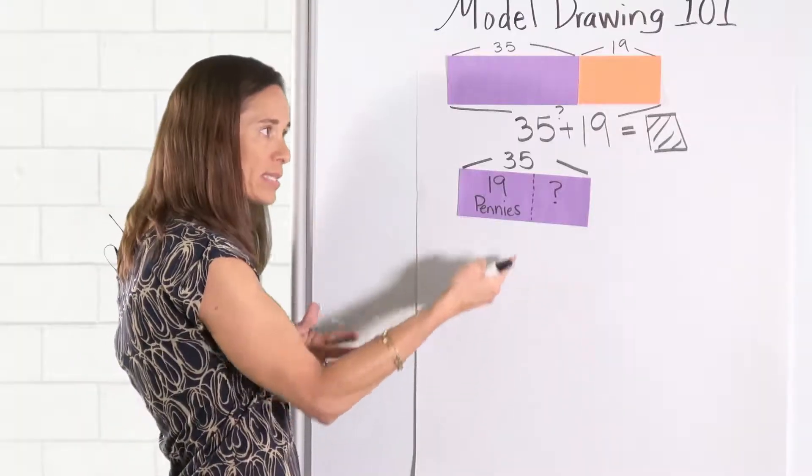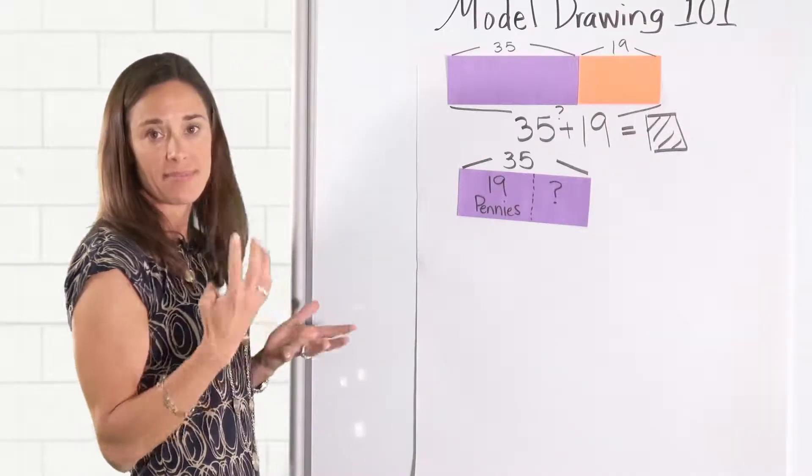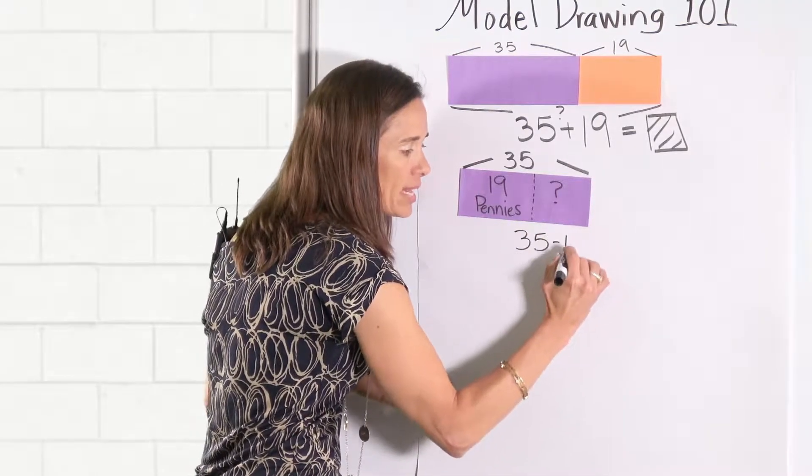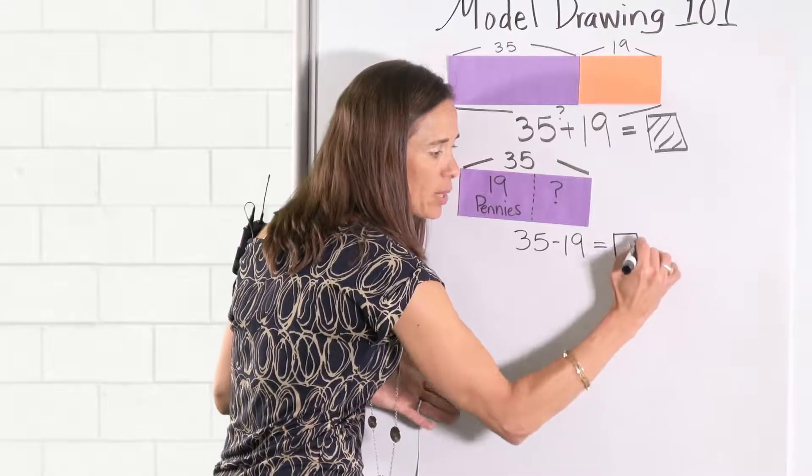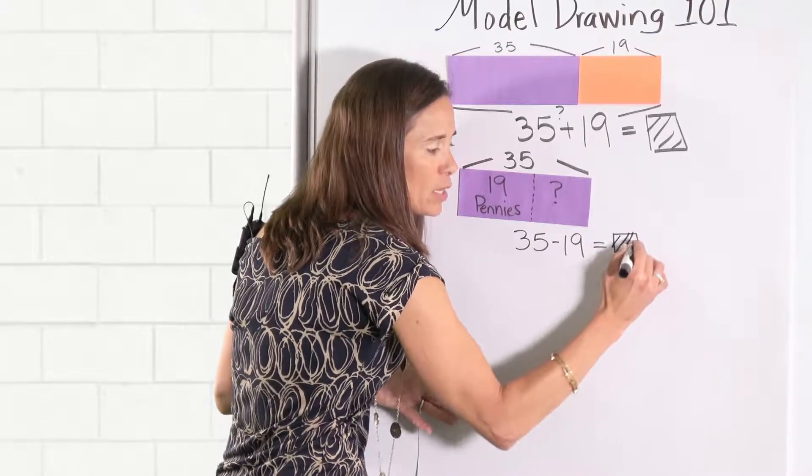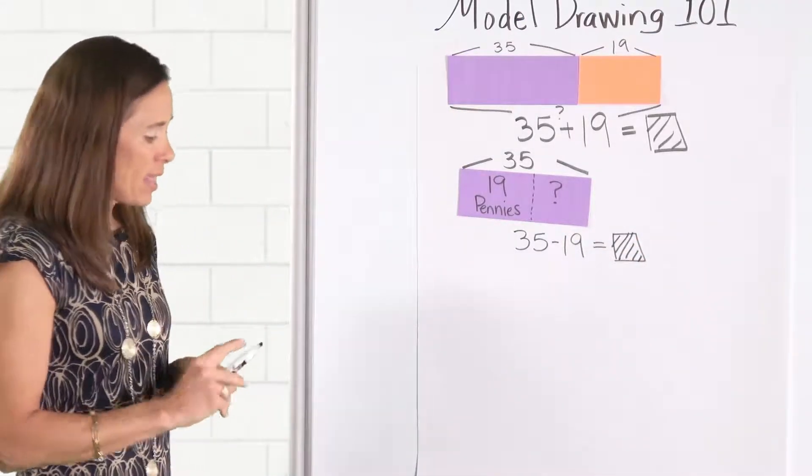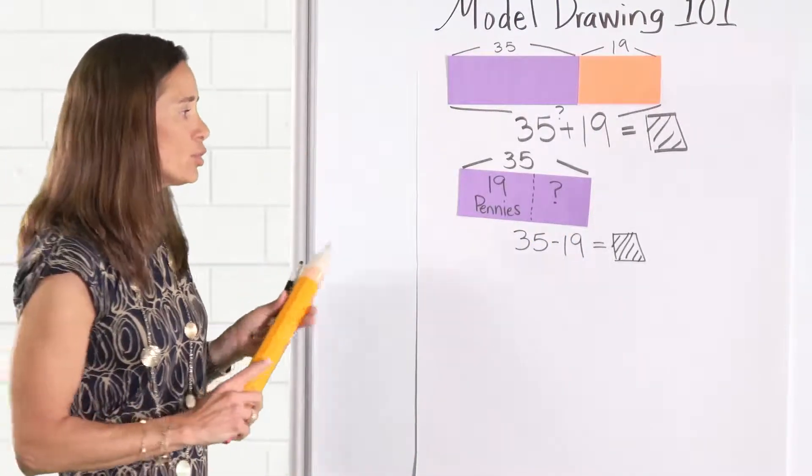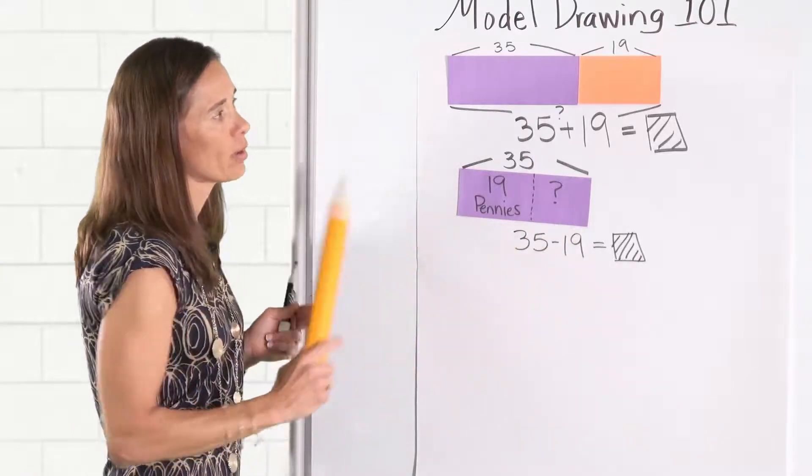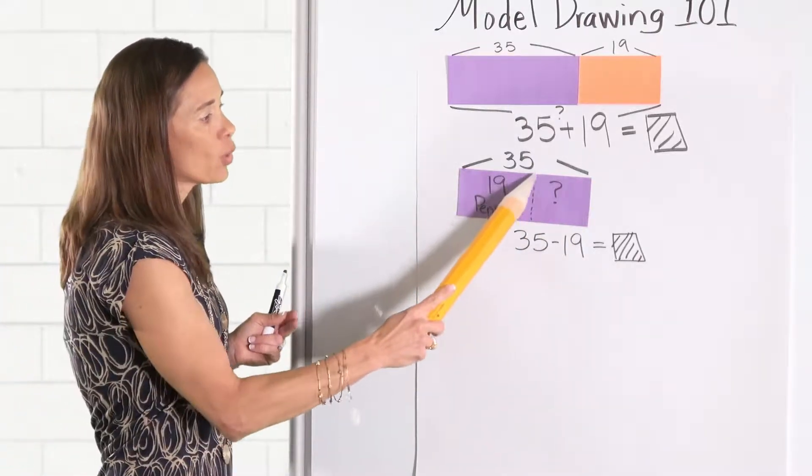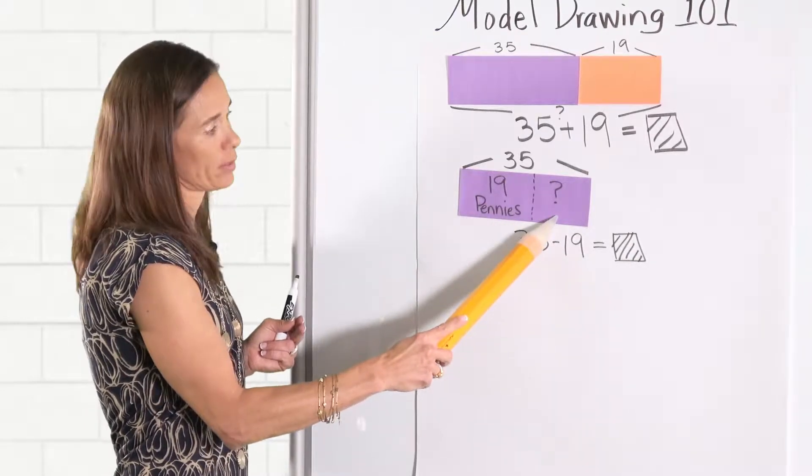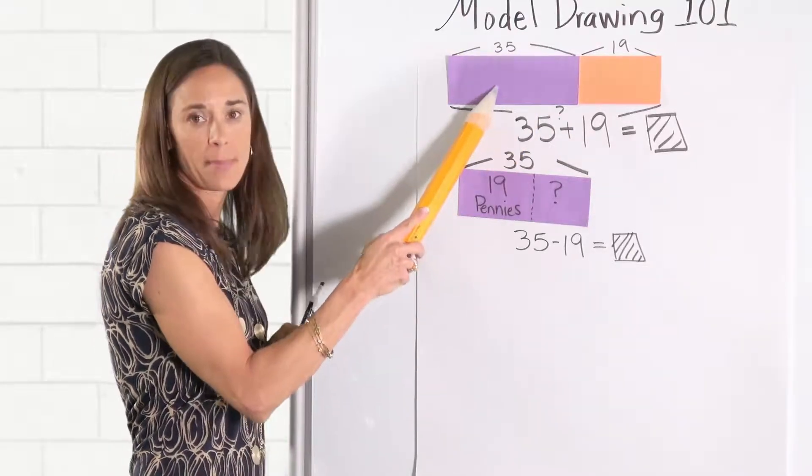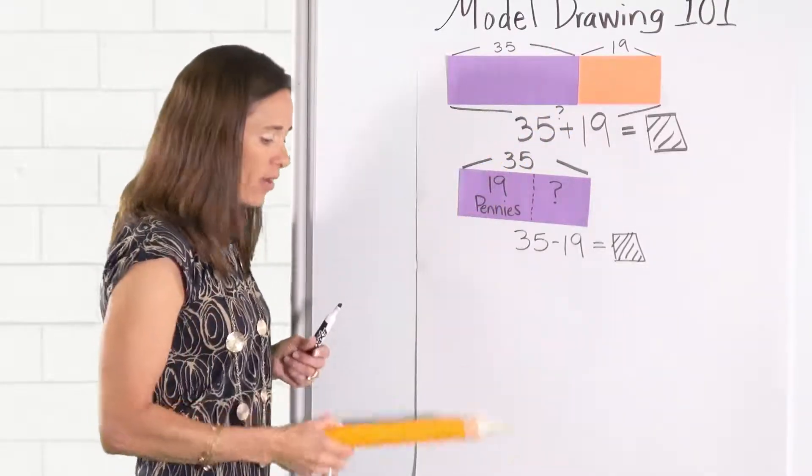So as always students are required to give the math sentence. The whole minus the part I know, the 19, will give me the part that I do not know. So in this situation the bar was used, the bar model was used to represent the total amount of coins. The coins were broken up into pennies and quarters. Whereas in our first model we had the action. We started with some and then we gave other coins.